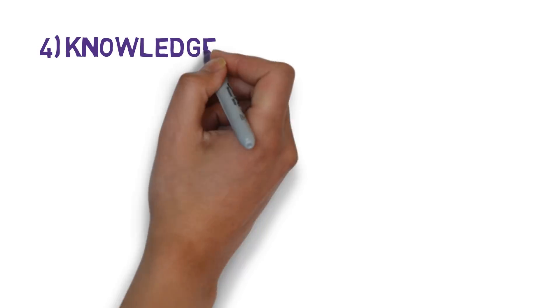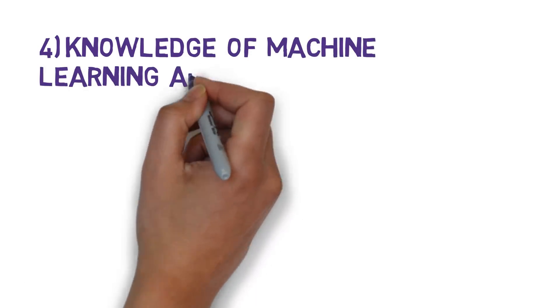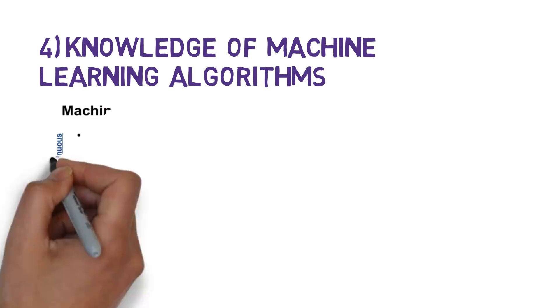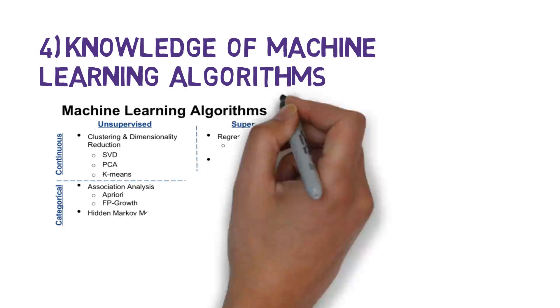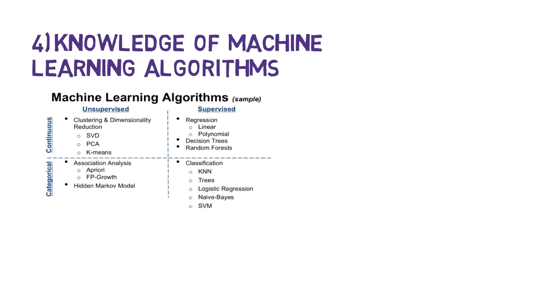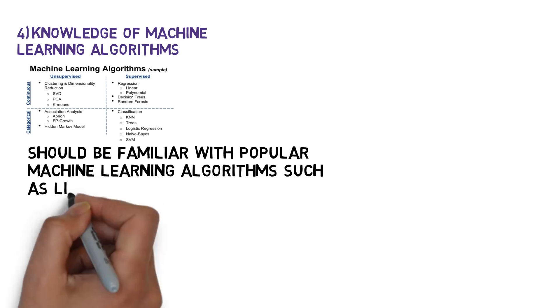Next, we have knowledge of machine learning algorithms. You should be familiar with popular machine learning algorithms such as linear regression, logistic regression, decision trees, random forests, clustering like k-means or hierarchical clustering, reinforcement learning, and neural networks.